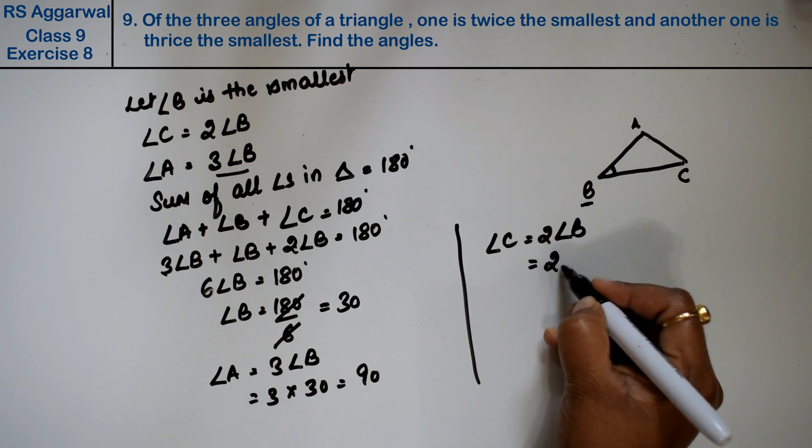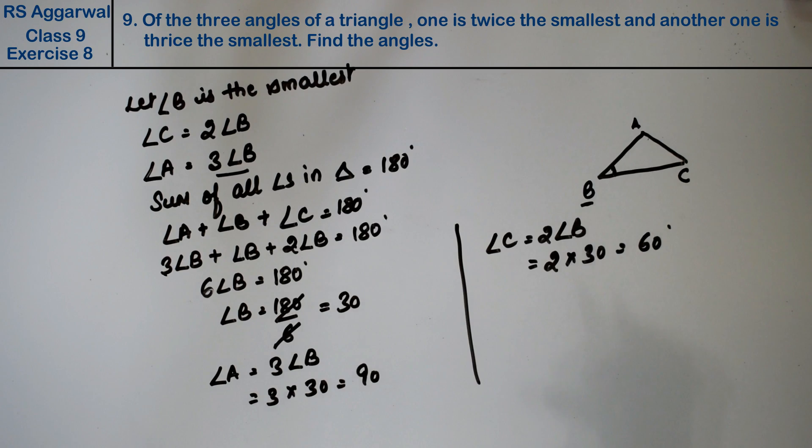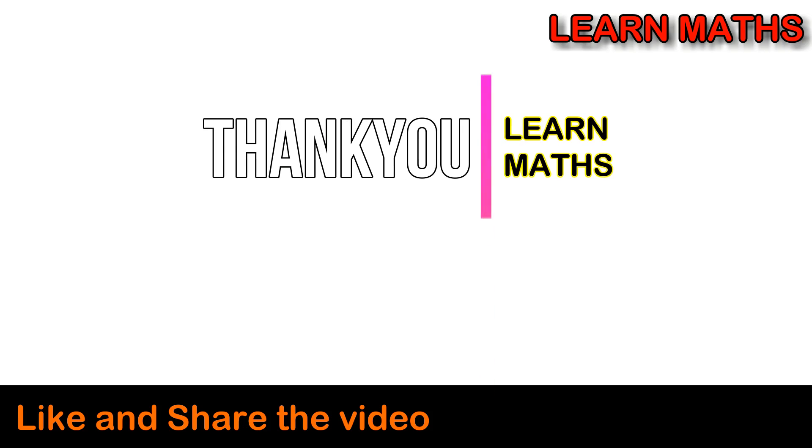That's 2 times 30, which equals 60 degrees. That's the answer. If you understood this step-by-step solution, please subscribe to my channel LearnMaths and share it with your friends. Thank you.